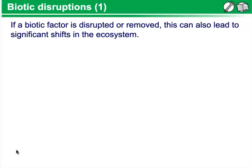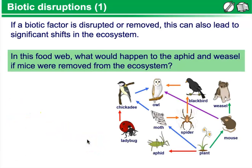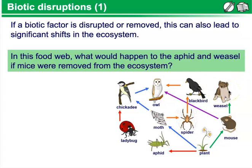If a biotic factor is disrupted or removed, it can also lead to significant shifts in ecosystems. In this food web, what do you think would happen to the aphid and weasel population if mice were removed from that ecosystem? The weasel depends upon mice for food — if they are removed, the weasel may not have enough food source. There's not really anything else in this food web that the weasel is consuming, so the weasel may have to migrate out of the environment in order to find food. Also, if the mouse population is gone, the plant population may increase, which may lead to an increase in the number of aphids, as more plant availability means more food available to the aphid.